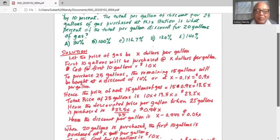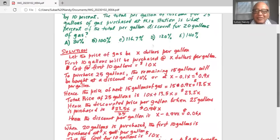X is the regular price, minus 0.94X the discounted price. The discount is 0.06X.